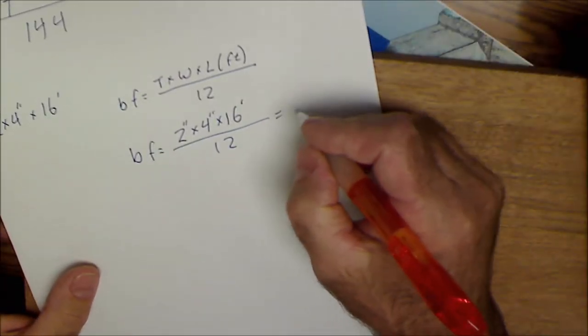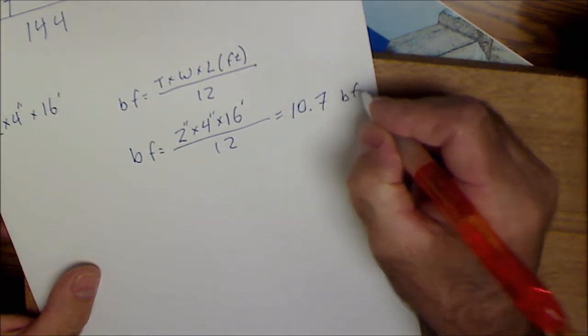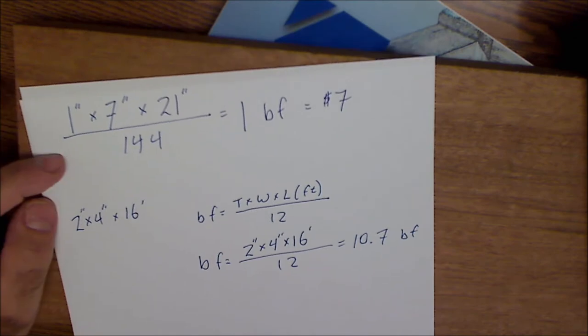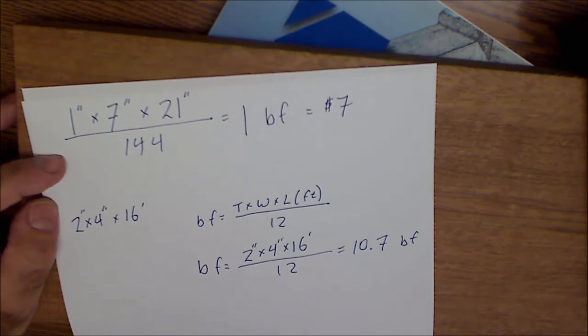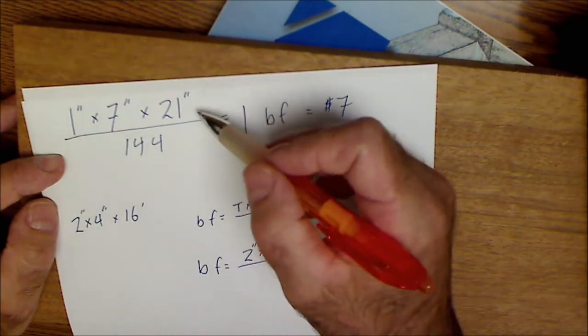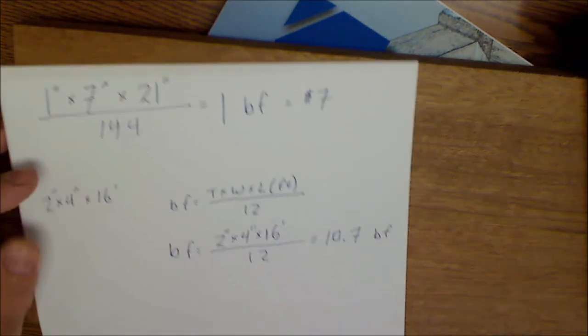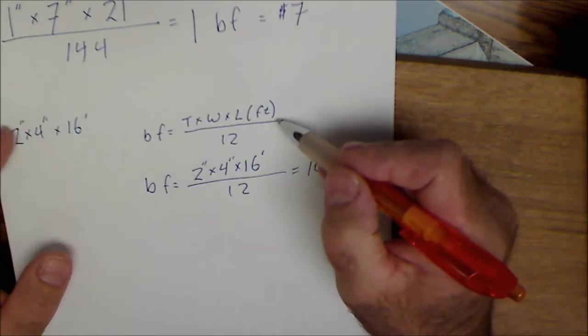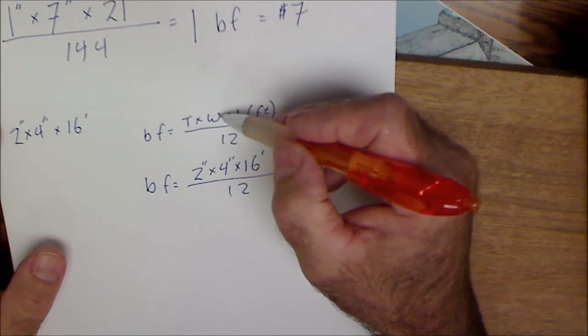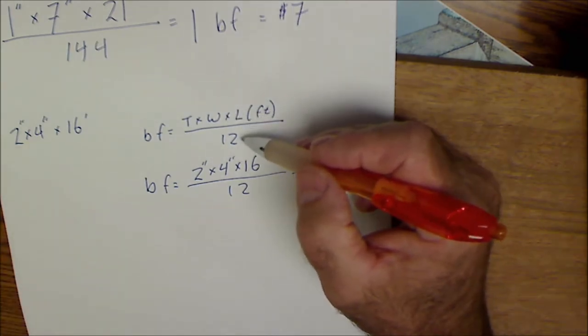So this works out to be about 10.7 board feet. This equation is probably easier if you're in a cabinet shop working with hardwoods. Keep everything, convert everything into inches and divide by 144. And this equation right here is probably easier if you're on the construction site buying framing lumber, which is thickness times width in inches times the length in feet and divide by 12. Let me do some more problems.